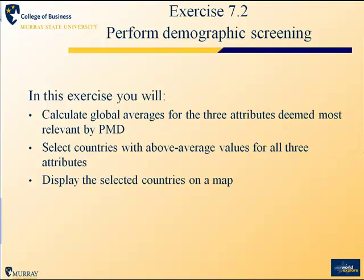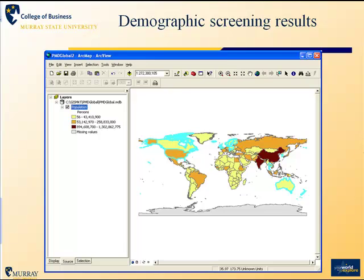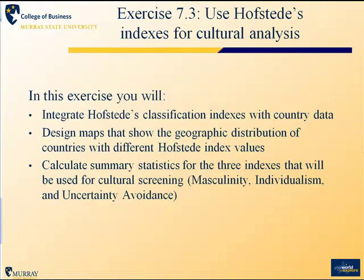In task two, you will use some of those same variables to screen countries based on their demographic characteristics. You'll calculate averages for the three attributes most important to this company, then select countries that are above average on all three of those values and display those on a map. This is the way that map will look after you've selected and identified those countries.